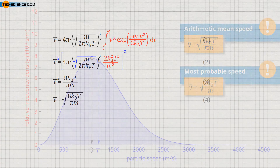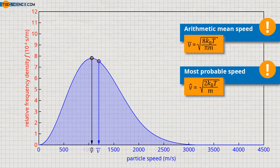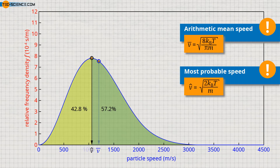If one compares the formulas for the most probable and the average speed, one notices that the average speed is higher than the most probable speed. This also becomes clear when comparing the area to the right and left of the maximum of the distribution function. 42.8% of the molecules have a speed below the most probable speed, while 57.2% have a speed above it. Thus, since more molecules have a speed above the most probable speed, the mean speed is shifted to higher values.